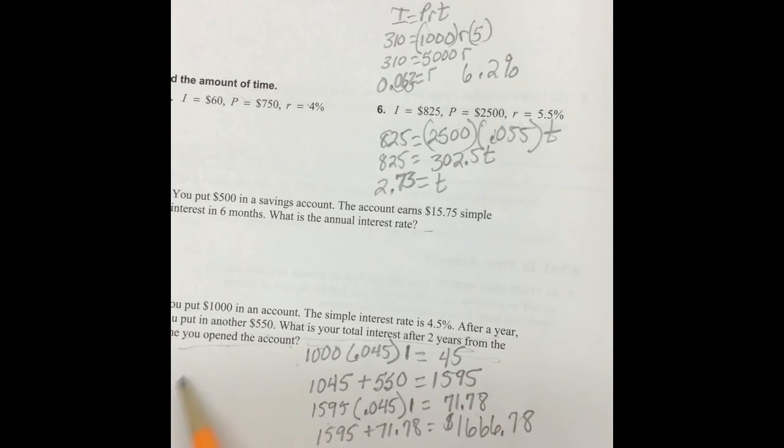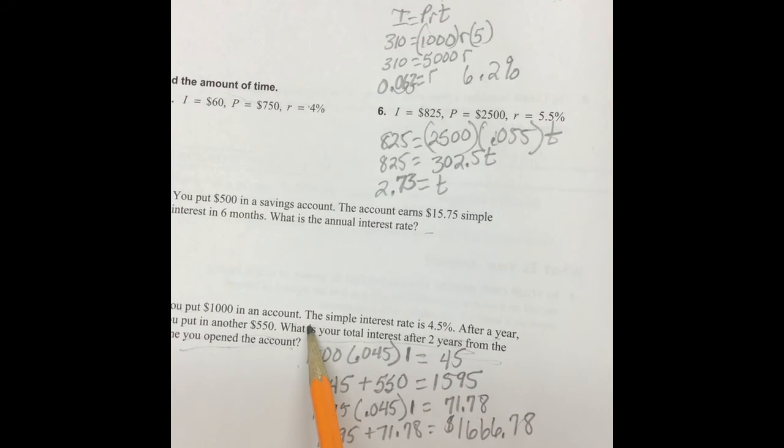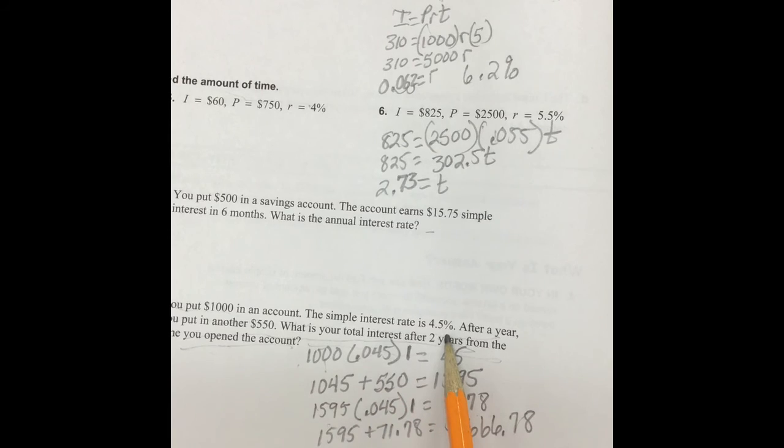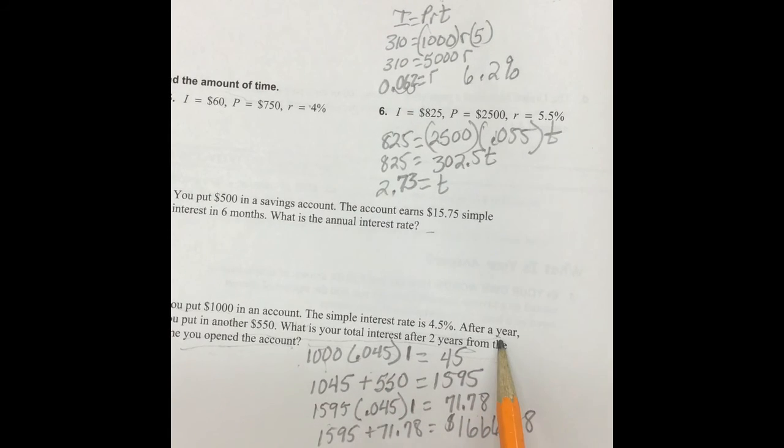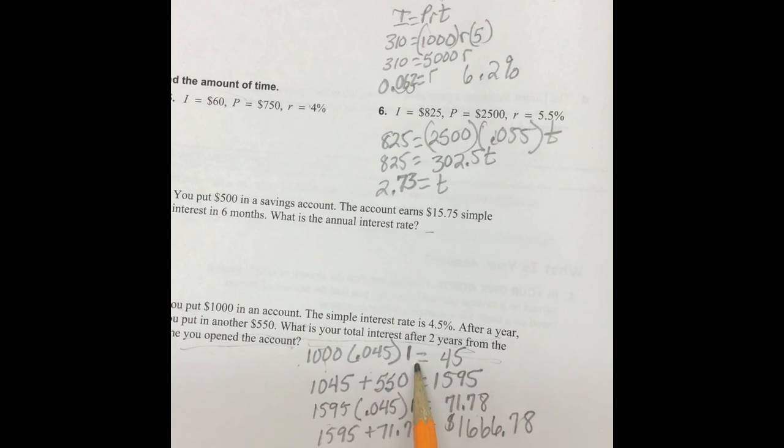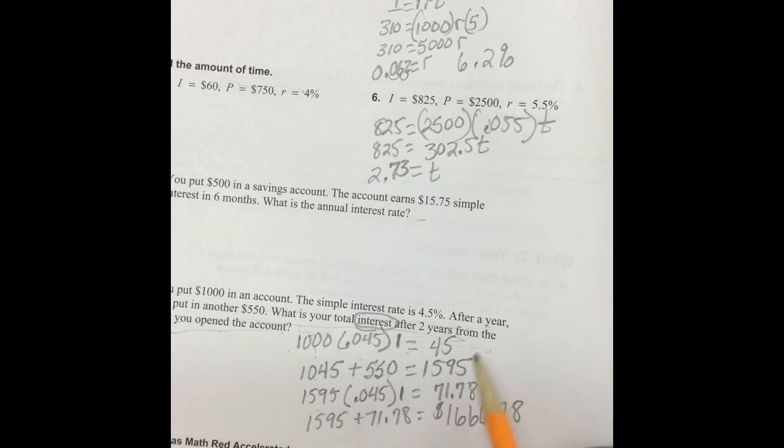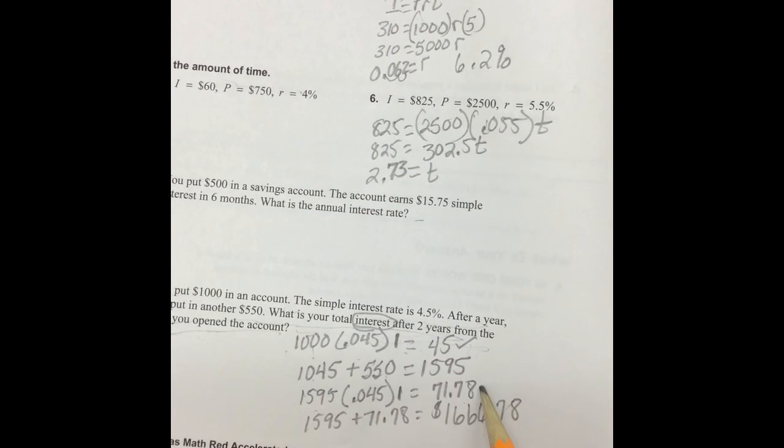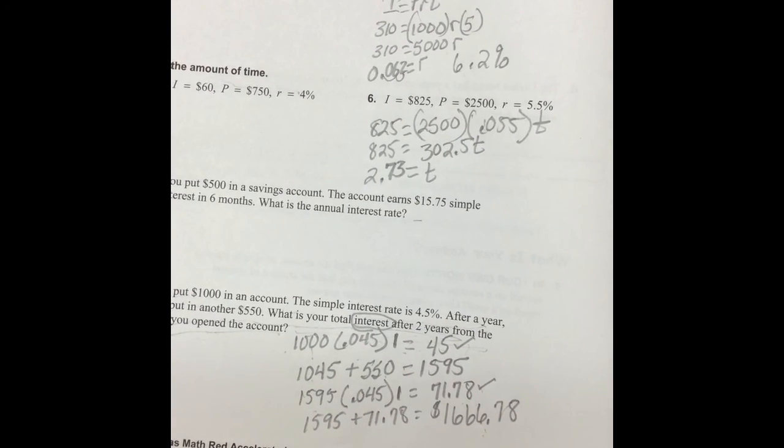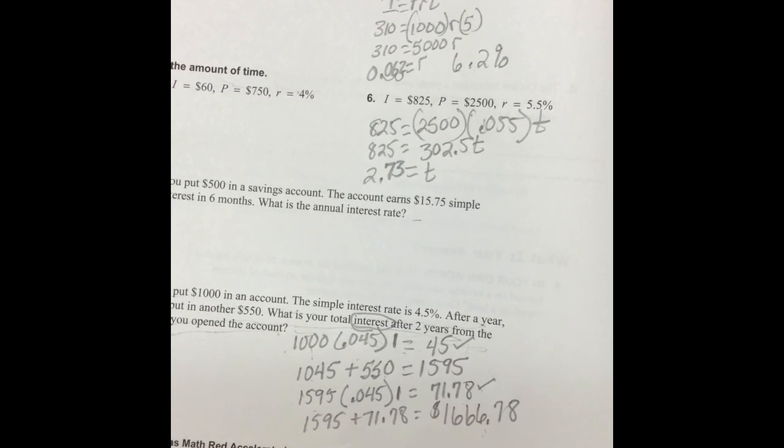Now, the problem said you put $1,000 in your account. Simple interest was 4.5%. After one year, you put an additional $550 here with your interest and your beginning principal. And it says, what is your total interest after two years? So we're looking for the total interest. We gave the total amount that's in the account, but what part of it was interest? Well, we know this was interest and we know this was interest. So let's add those two together to get our total interest.